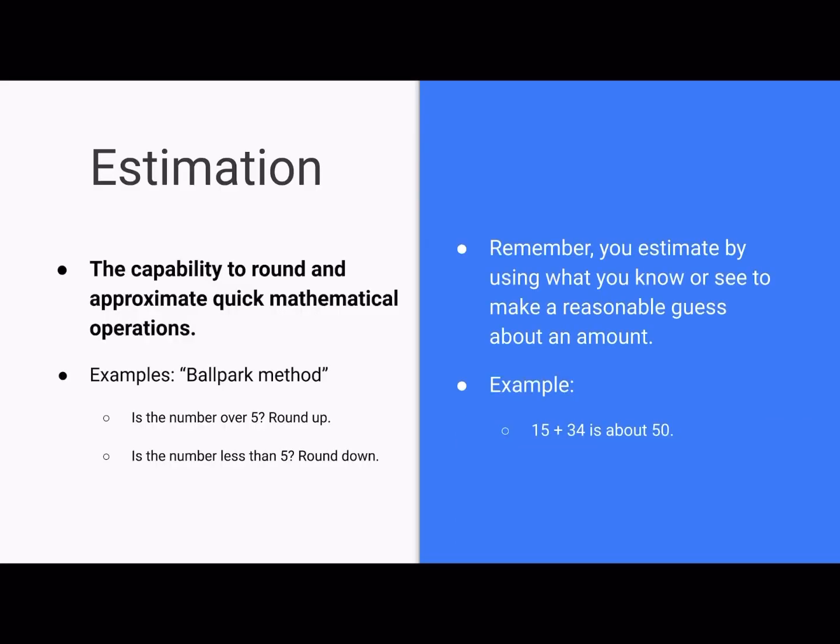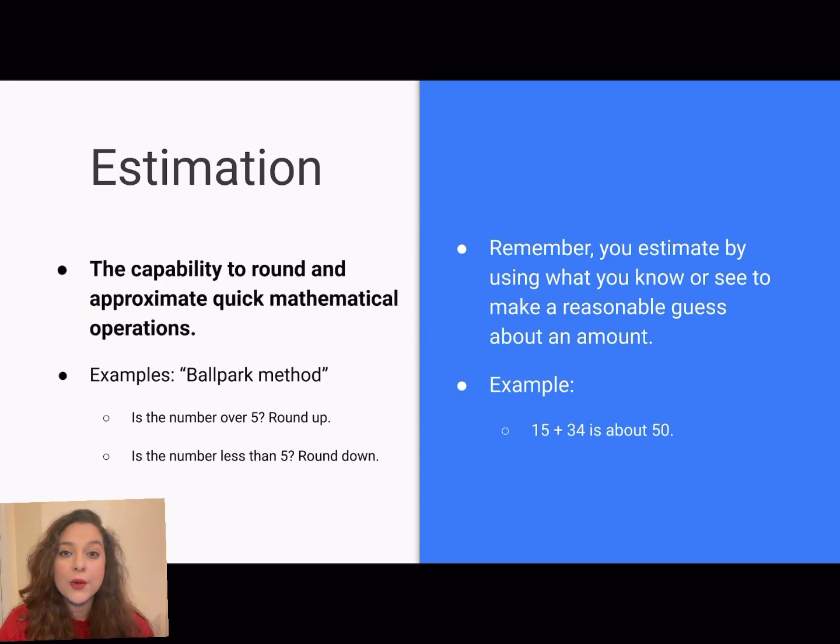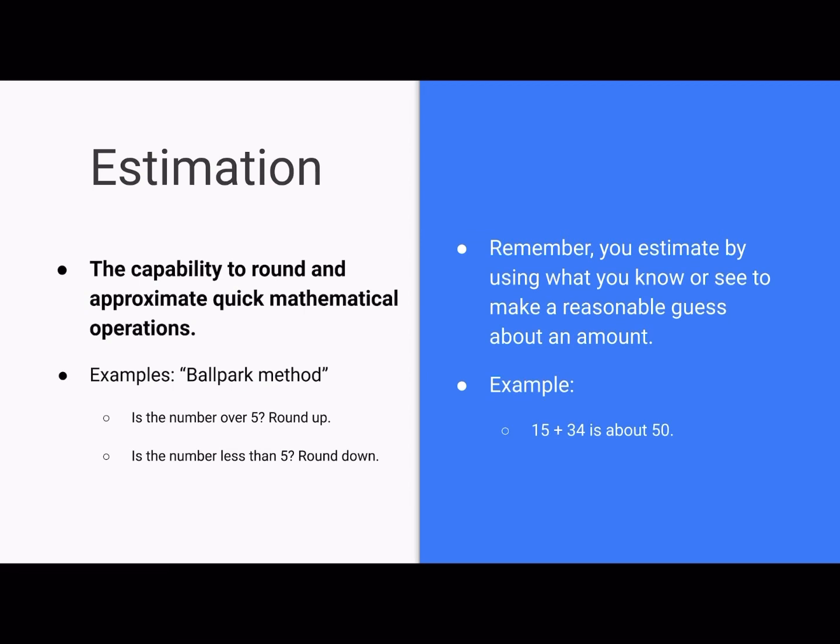So let's start with estimation. Now estimation is the capability to round and approximate quick mathematical operations. An example of using this in your everyday life would be the ballpark method which is basically if the number is over five you would round up, but if it's below five you would round down. But also remember you estimate by using what you know or what you see to make a reasonable guess about that amount.